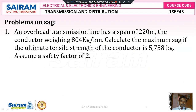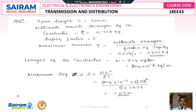Problem 1: An overhead transmission line has a span of 220 meters. The conductor weighs 804 kg per kilometer. Calculate the maximum sag if the ultimate tensile strength of the conductor is 5758 kg. Assume a safety factor of 2. Given: span length L = 220 meters, ultimate tensile strength = 5758 kg, safety factor = 2. Therefore, maximum tension T = 5758/2 = 2879 kg.